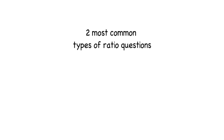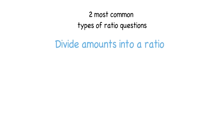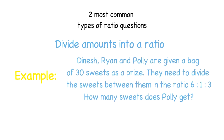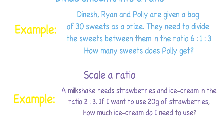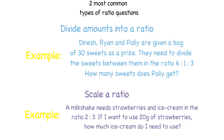Let's look at the two most common types of ratio questions. The first is dividing amounts into a ratio. For example: Dinesh, Ryan and Polly are given a bag of 30 sweets as a prize and need to divide them in the ratio six to one to three — how many sweets does Polly get? The second type is scaling a ratio: a milkshake needs strawberries and ice cream in the ratio two to three — if you use 20 grams of strawberries, how much ice cream do you need?